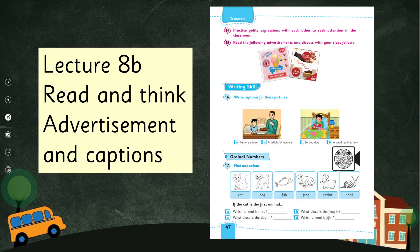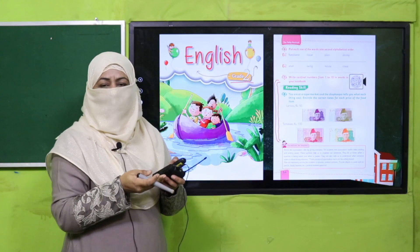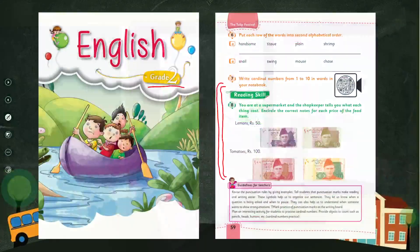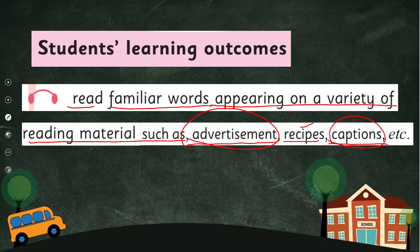My dear students, today we are under the title of 'Read and Think.' We are going to learn reading advertisements and captions. Before this, in English for Grade 2, you have learned reading different material, and even in Grade 3 we are learning. So wherever you find words to read, you start reading. We are going to learn further — to read familiar words appearing on a variety of reading material such as advertisements, recipes, and captions. Our focus today is advertisement and caption. This is our today's SLO.